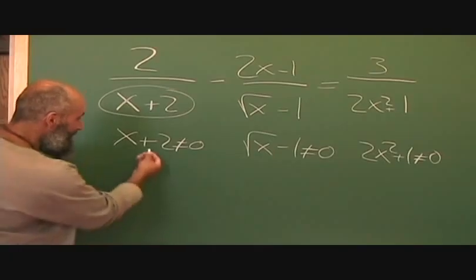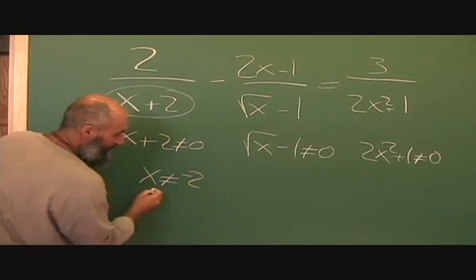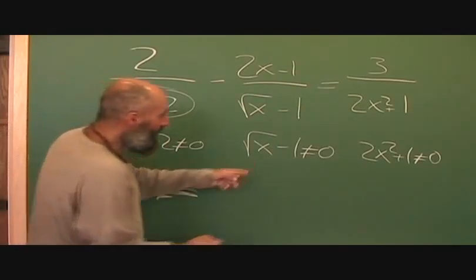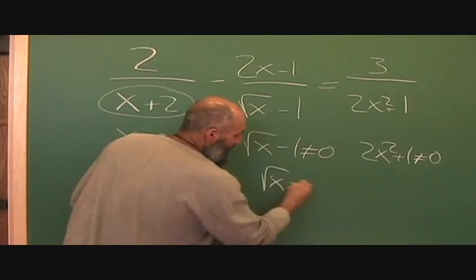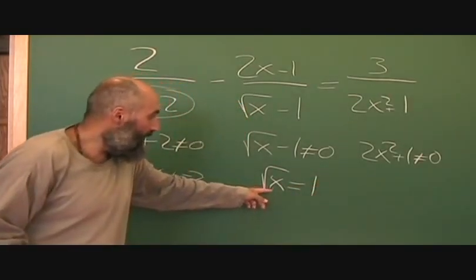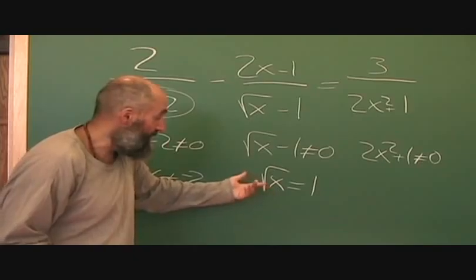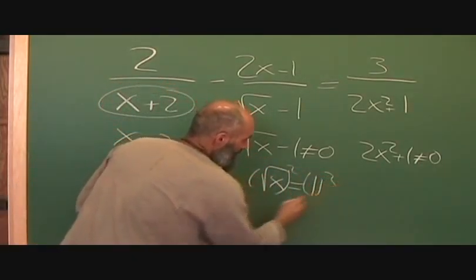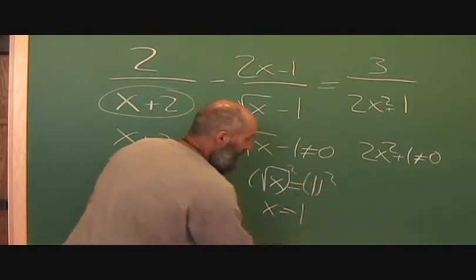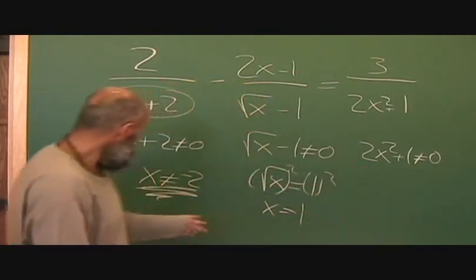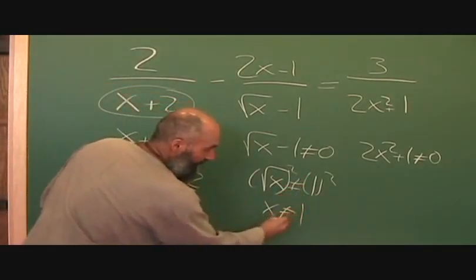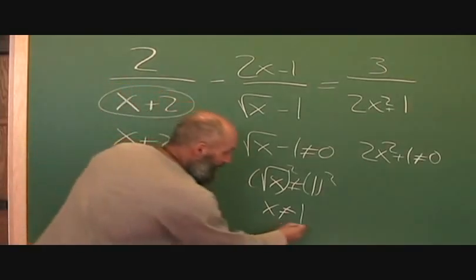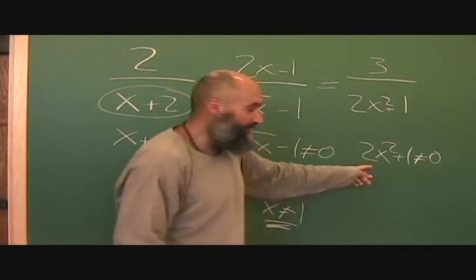For the first one, x cannot equal negative 2 — that is a restriction. For the second one, you grab the 1 over so you get square root of x equals 1, and to get x by itself you do the opposite, which is square. You square both sides, so x equals 1 squared, which is just 1. So your restriction is x can't equal negative 2 and x can't equal 1.